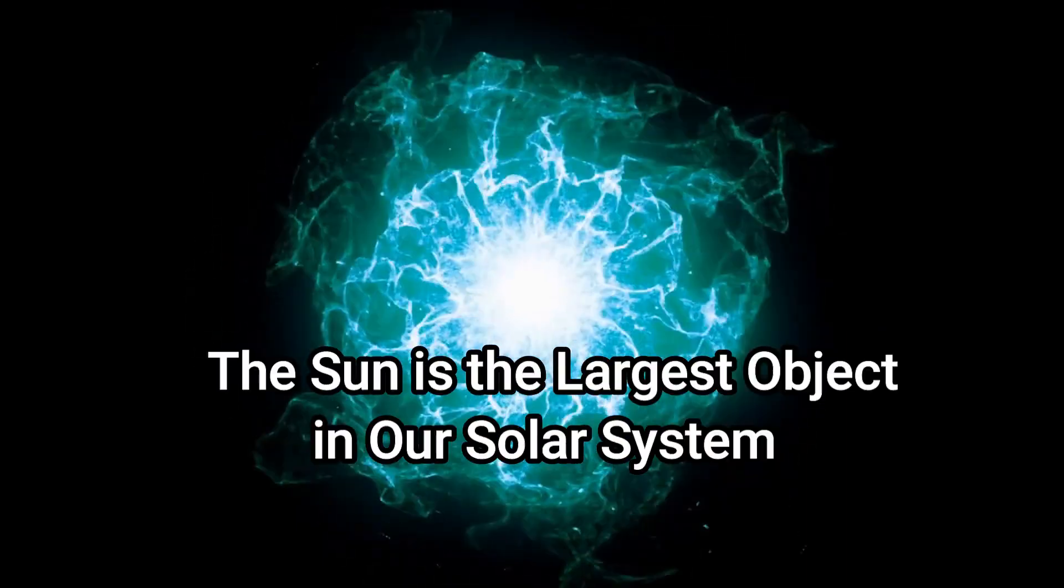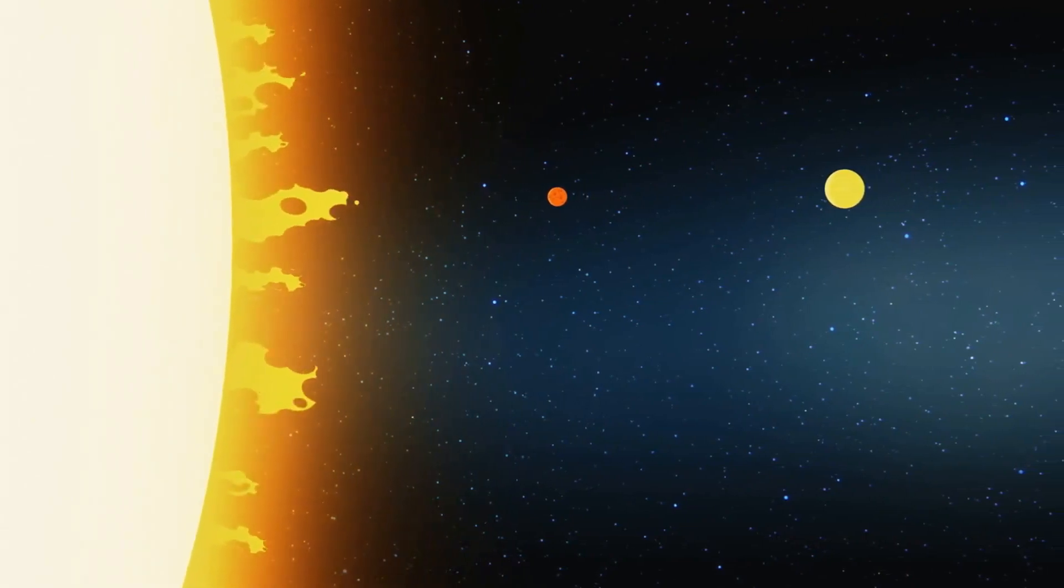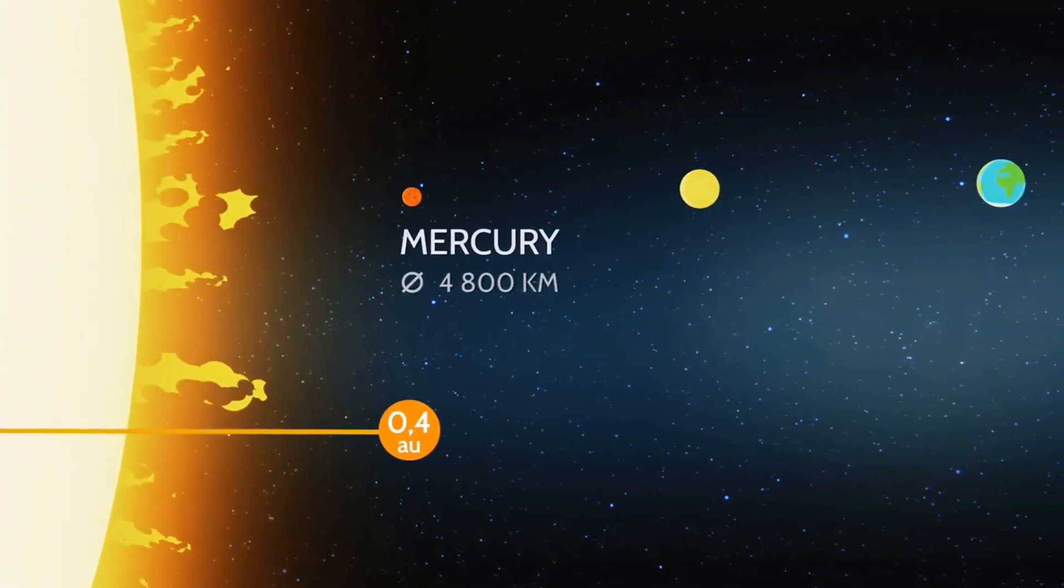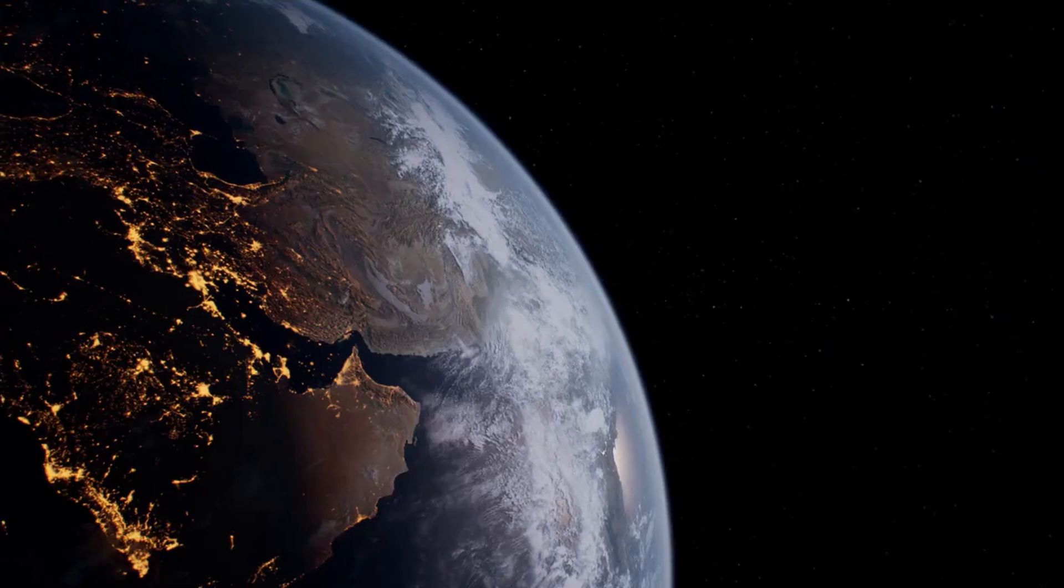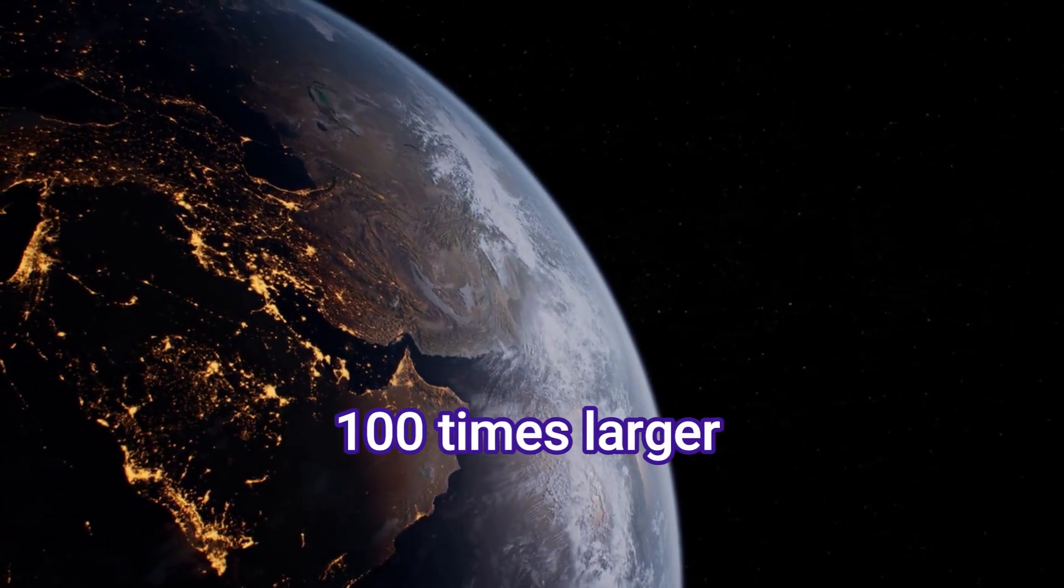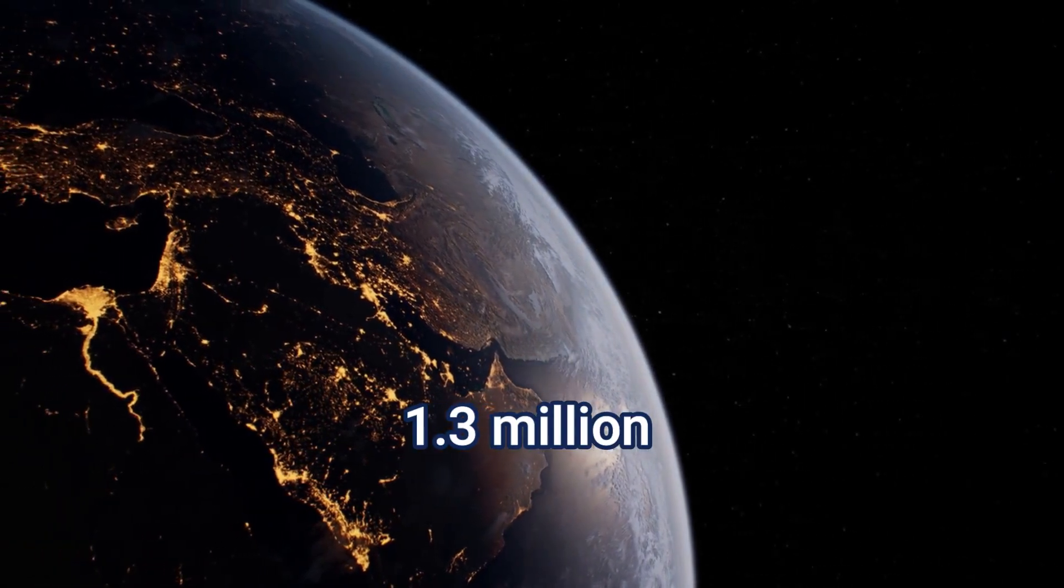Fact number three, the sun is the largest object in our solar system. The sun is by far the largest object in our solar system, with a diameter of 1.39 million kilometers. That's over 100 times larger than the Earth. In fact, you could fit 1.3 million Earths inside the sun.